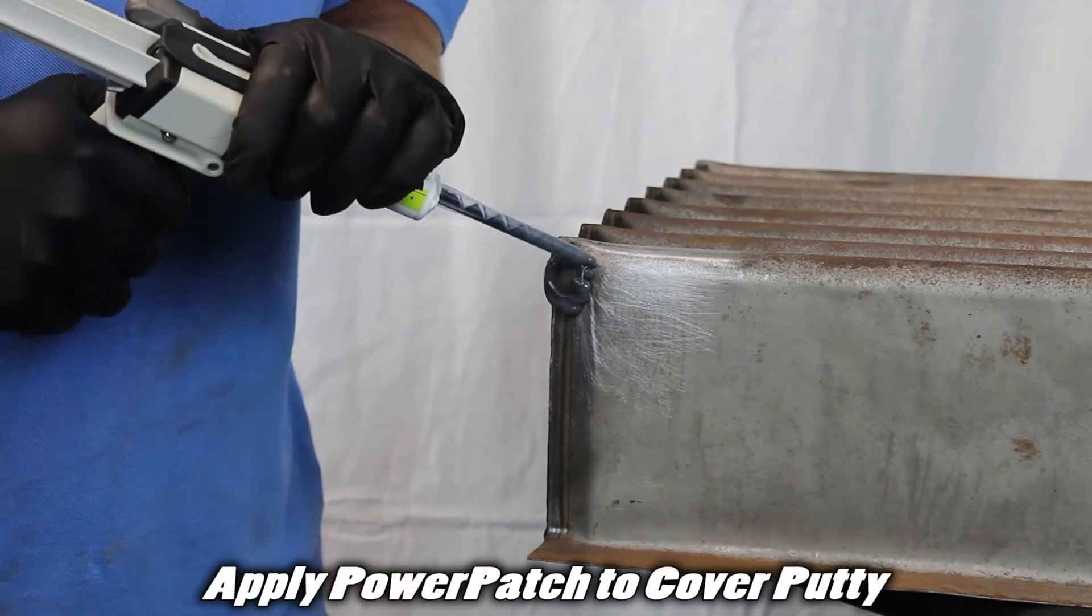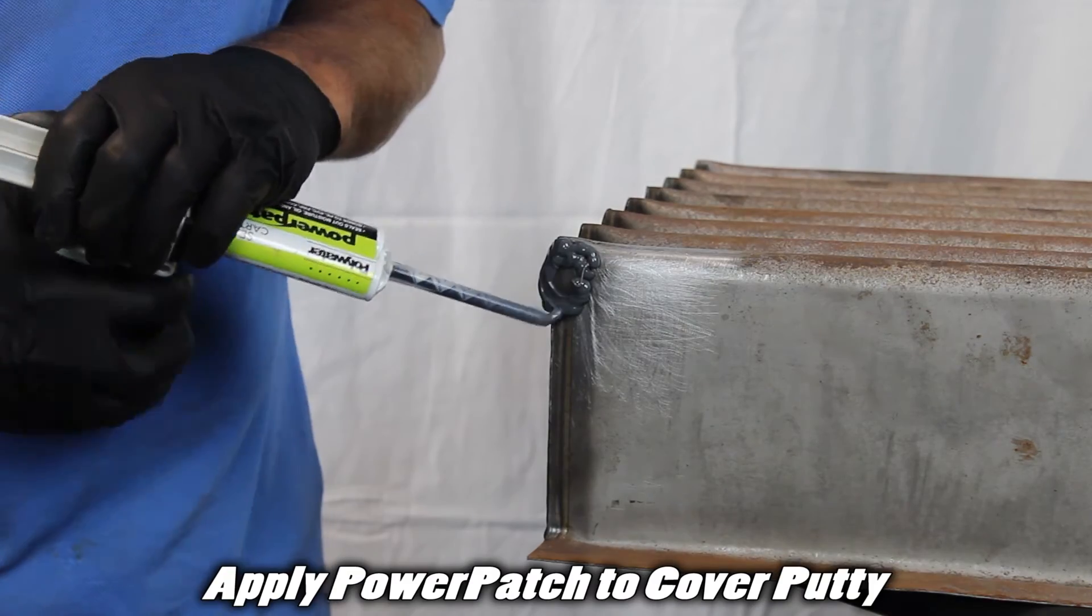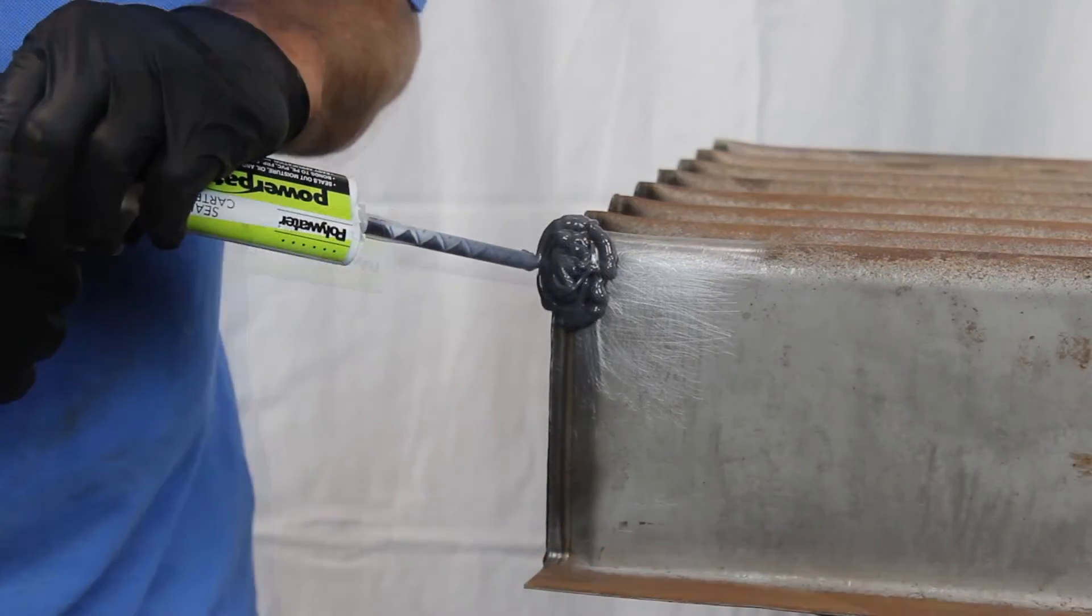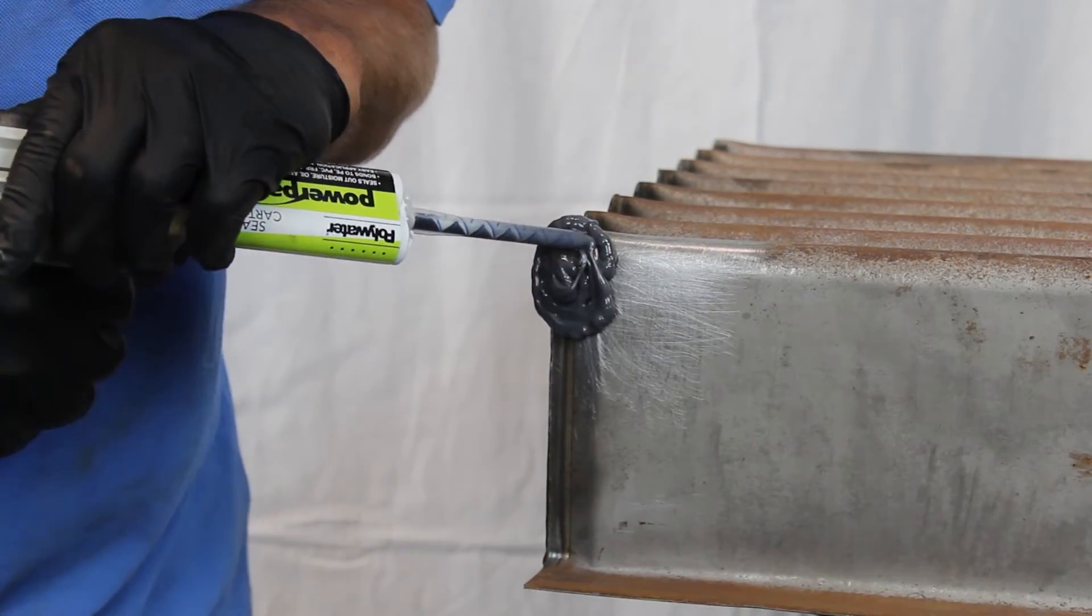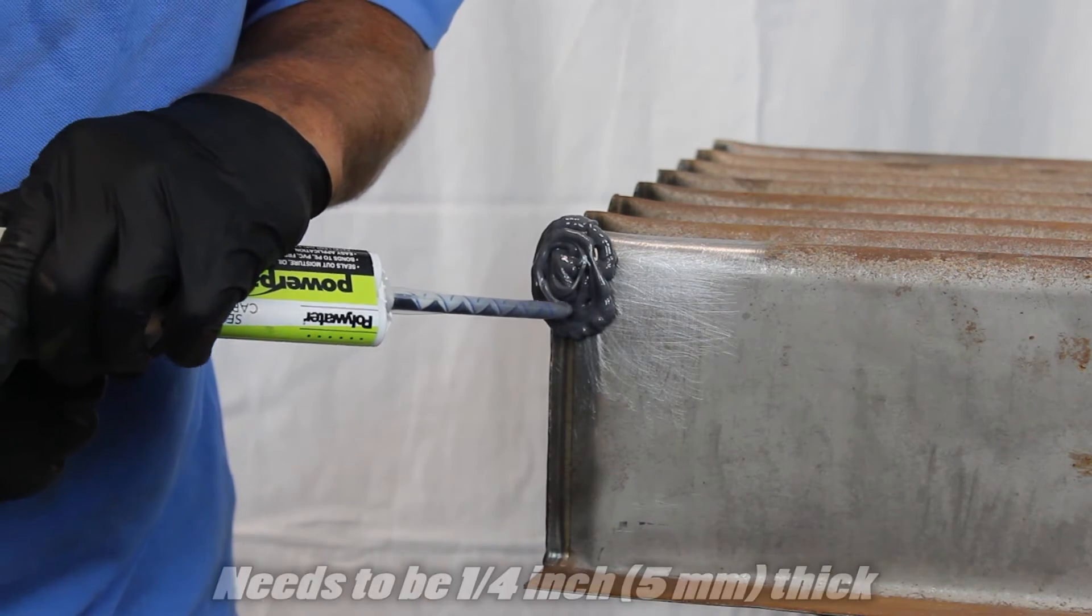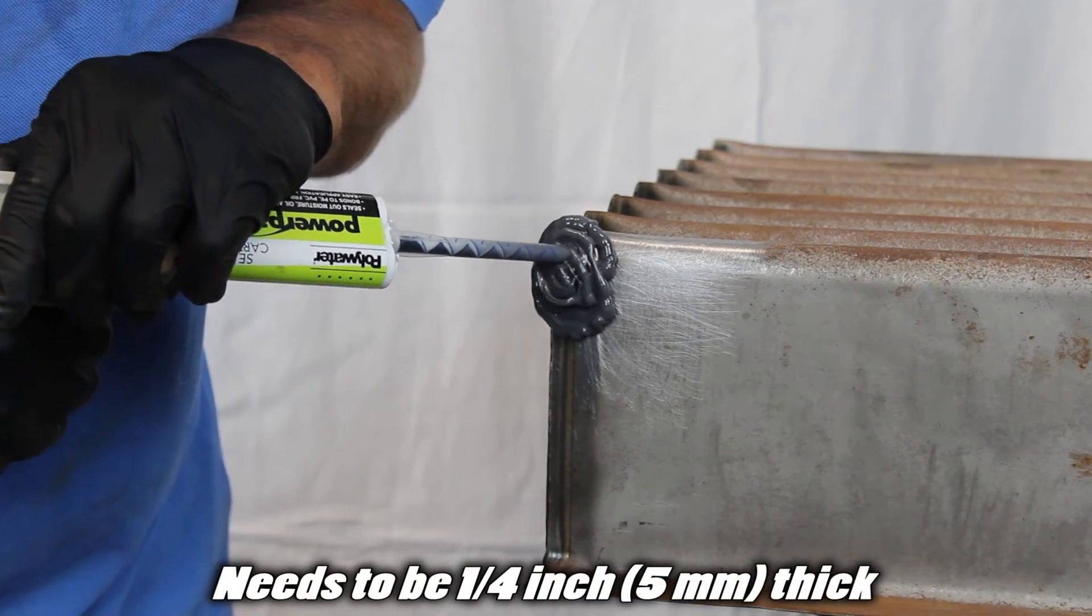Apply power patch sealant to cover the putty and half inch to one inch, 13 to 25 millimeters, beyond it. The power patch sealant needs to be a quarter inch, five millimeters thick.